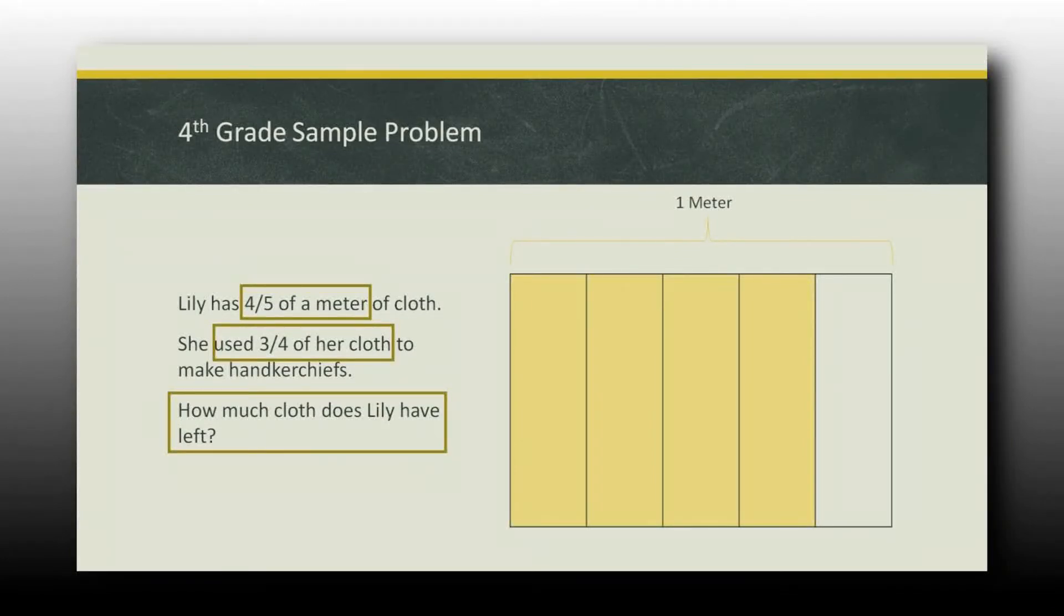Here's how we teach it in a Singapore classroom. Just so you can get an idea. We say the first thing you do in any word problem, any problem solving type of problem, is you need to figure out what the important information is. So we teach kids, Lily started with four fifths of a meter of cloth. She used three quarters of that cloth. How much cloth does Lily have left? That's the question. That's what they want me to figure out.